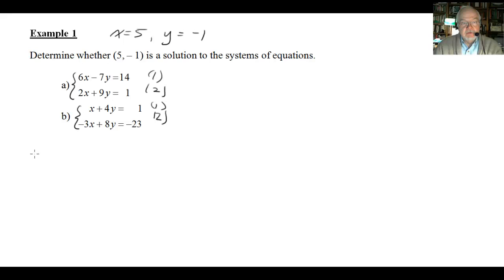So let's do a. A, I have 6, and instead of putting an x, I'm going to put a parenthesis. Minus 7 times y equals 14. And what am I going to plug in the parenthesis? Well, for x, I'm going to plug in a 5. And for y, I'm going to plug in a minus 1. 6 times 5 is 30.